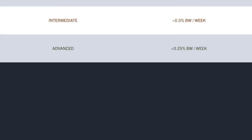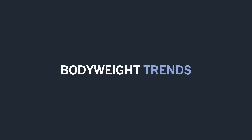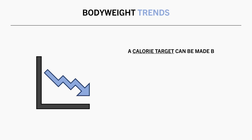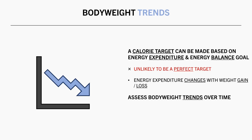The number of calories we should consume per day depends primarily on your current energy expenditure and whether you want to gain, lose, or maintain body weight. You might determine that you need to consume a certain number of calories to meet your calculated targets. While this calculation might be approximately appropriate, it is unlikely to be perfect, and your calorie requirements will likely need to be adjusted over time based on changes in energy expenditure due to weight gain or weight loss. So to accurately determine calorie requirements, we need to track our body weight over time, assess the average trend, and adjust calorie intake based on what this trend looks like.